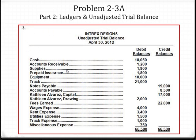Once you are finished recording the ledgers, you will take the ending balances and apply them to the normal debit or credit column they belong in. Cash, accounts receivable, supplies, prepaid insurance, equipment, and truck are all assets with a normal debit balance, so we pull this information directly from the ledgers. Cash balance is $18,050; accounts receivable is $1,200; supplies is $1,800; prepaid insurance is $1,800; equipment is $10,000; and truck is $21,000.